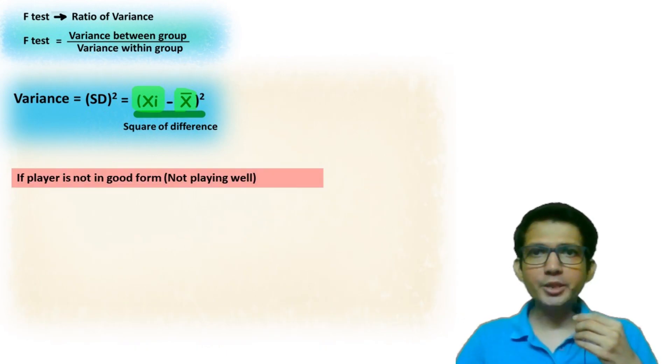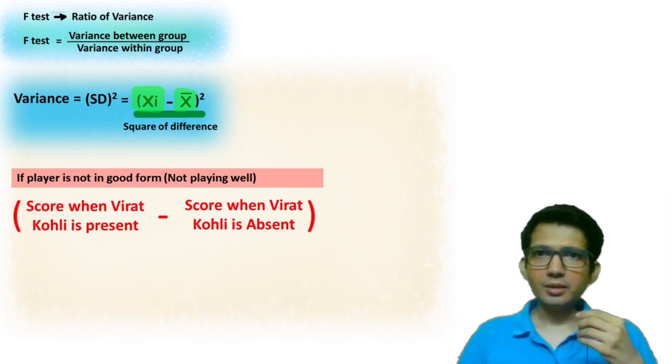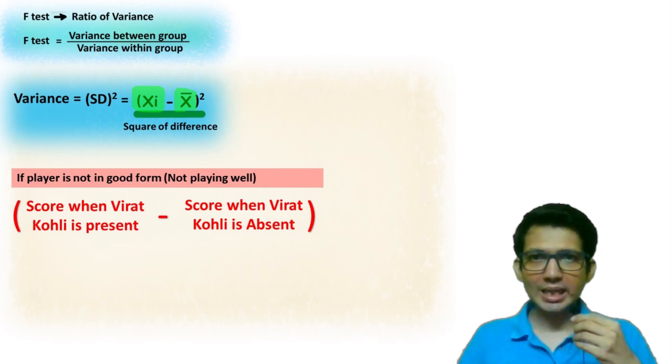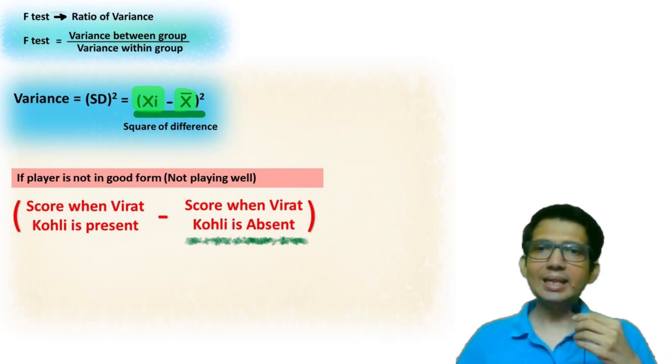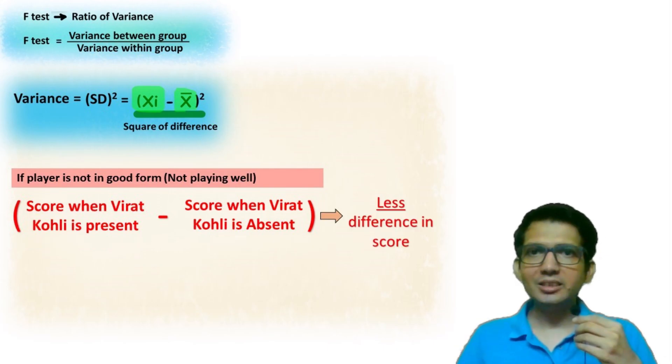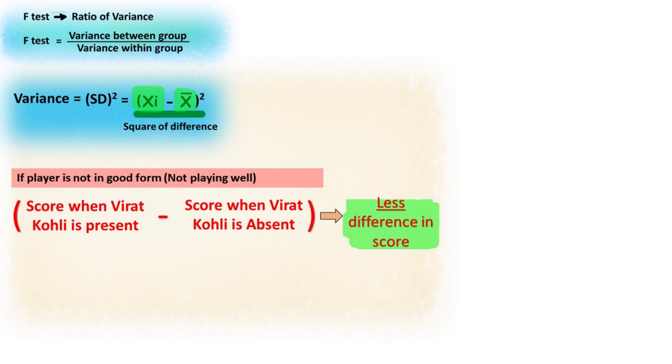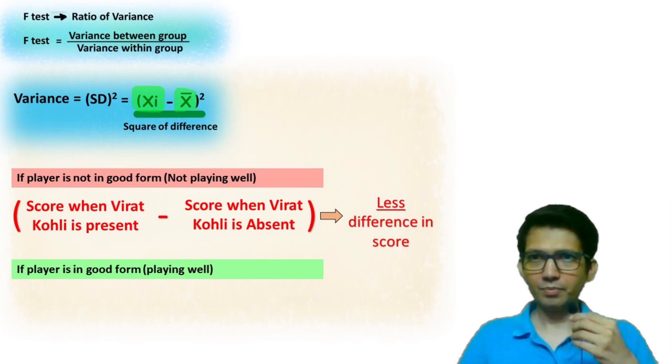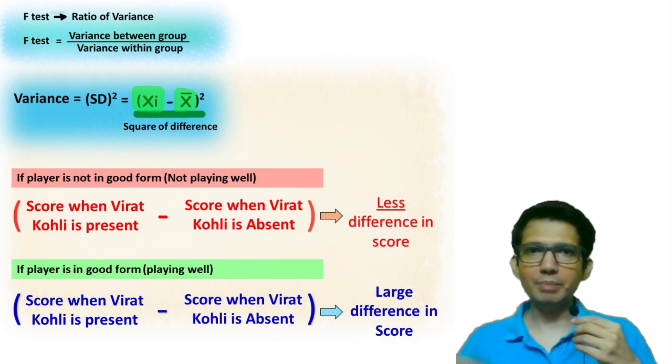If the player is not in good form, he is not playing well, then the difference in total score of the team when player is present versus when he is absent, this difference will be less. If he is in good form, if he is playing well, then this difference will be more.